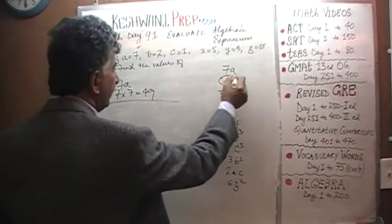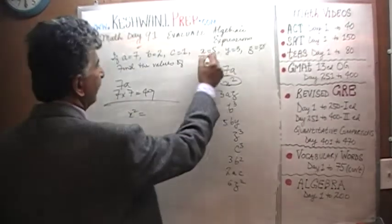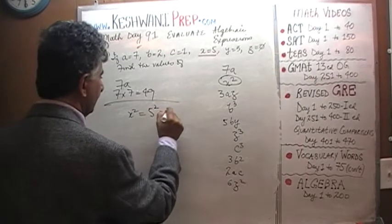Then we have X squared. X squared is simply going to be, X is how much? X is 5, so it's 5 squared, which is going to be 25.